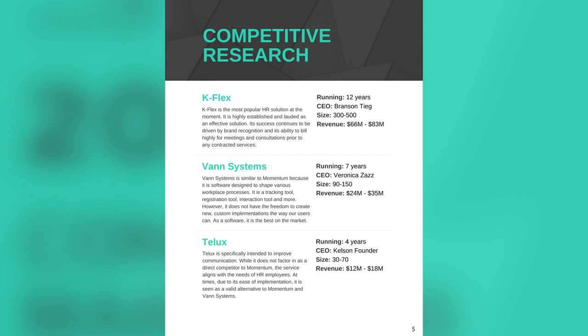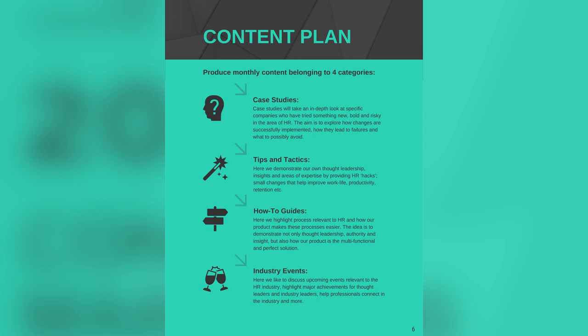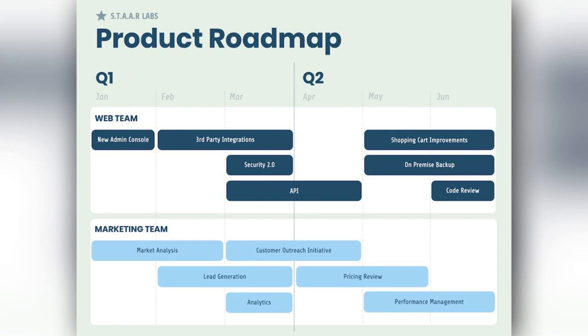Breaking your strategy down into tasks will make it easier to tackle. Another important way to visualize your marketing strategy is to create a project roadmap. A project roadmap visualizes the timeline of your products with individual tasks — our roadmap maker can help you with this. For example, this project roadmap shows how tasks on both the marketing and web design side run parallel to each other.